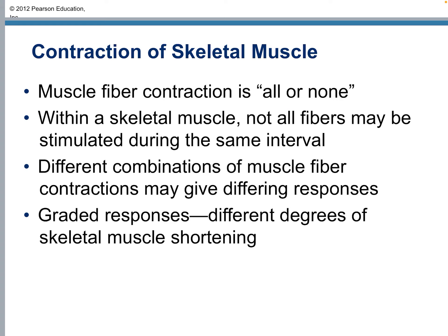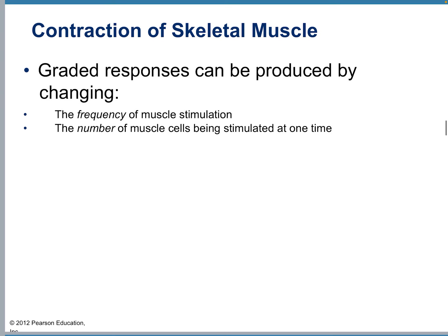Within the skeletal muscle, not all fibers may be stimulated. Different combinations may give different responses. For example, if you want to hold a child you're going to be very gentle, but if you're holding your dog while giving him a bath, you'll use the same muscles but many more fibers for a stronger reaction. The graded responses are the different degrees of shortening, in response to either how often the muscle is stimulated or the number of muscle cells being stimulated.